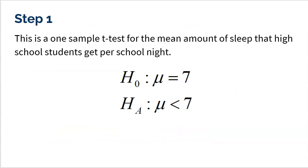So step one is naming it. This is a one-sample T-test for the mean amount of sleep that high school students get per night. The null is going to be seven hours — that's what students need to be appropriately prepared, so we assume the kids in Maggie's school are meeting that. The alternative is what Maggie is trying to prove: that kids at her school are on average getting less than seven hours. We use mu, not x-bar, because the null and alternative are about the true mean for all the kids in her school.